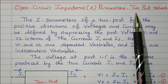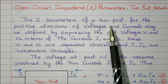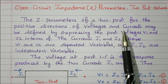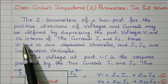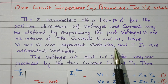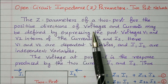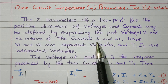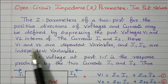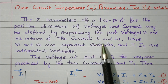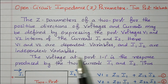Now we will go to the topic: two port network, and in that, open circuit impedance Z parameters. The Z parameters of a two port network for the positive direction of voltage and current may be defined by expressing the port voltages V1 and V2 in terms of currents I1 and I2. Here V1 and V2 are dependent variables, and I1 and I2 are independent variables.